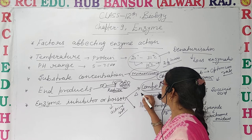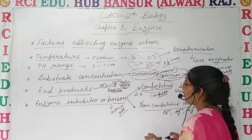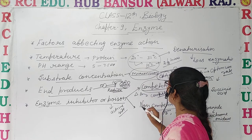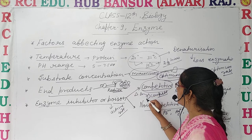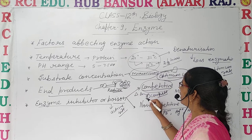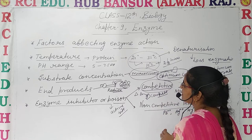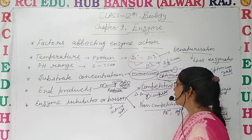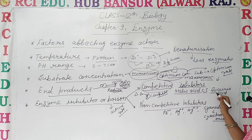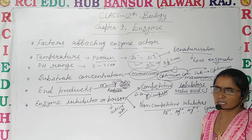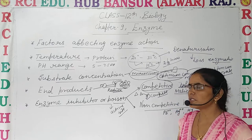For example, consider the main substrate — competitive inhibitors compete with it. When these competitive inhibitors bind with the active sites of the enzyme, they decrease the enzymatic activity. For example, malic acid is the competitive inhibitor of succinic acid.